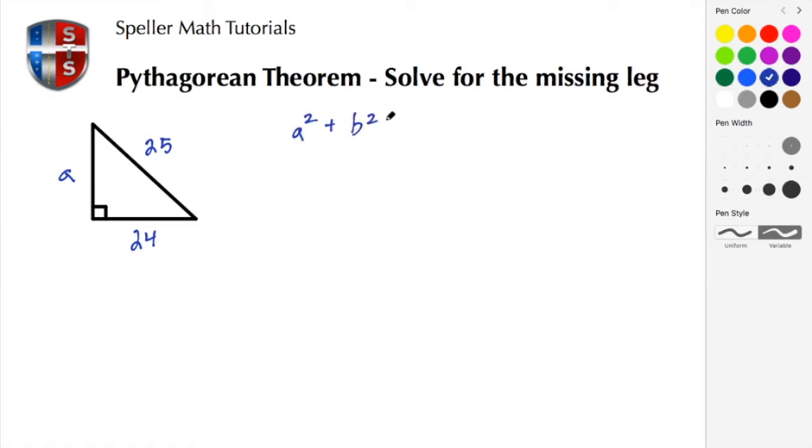Where a and b are the legs and c is the hypotenuse, which is the side opposite the 90 degree angle. In this problem here we see that we don't have a, so we're going to write a squared plus 24 squared equals 25 squared.